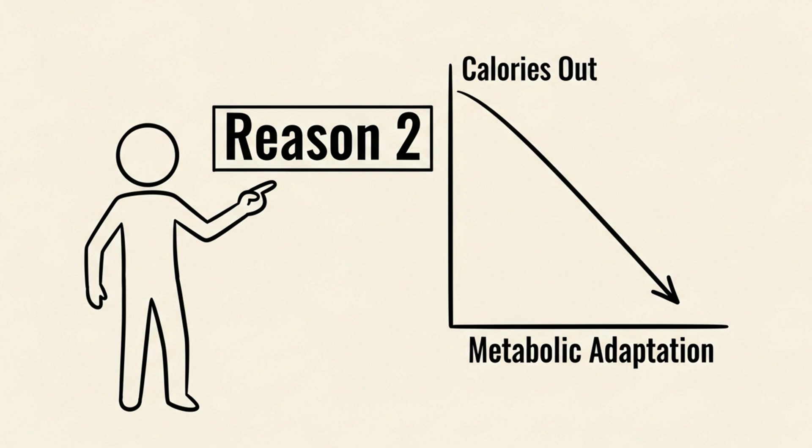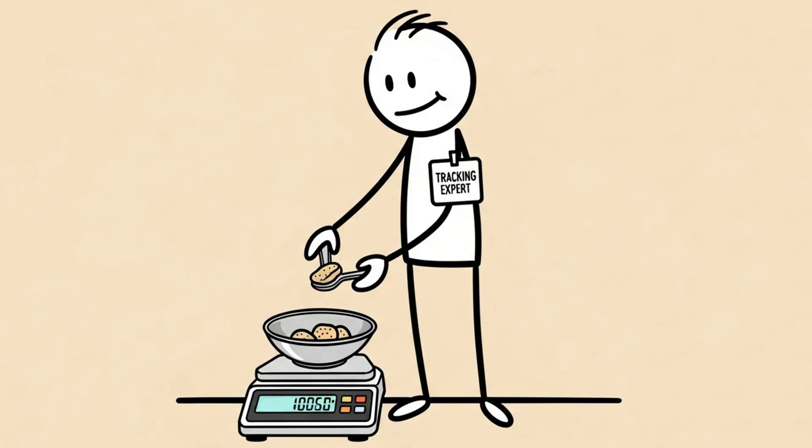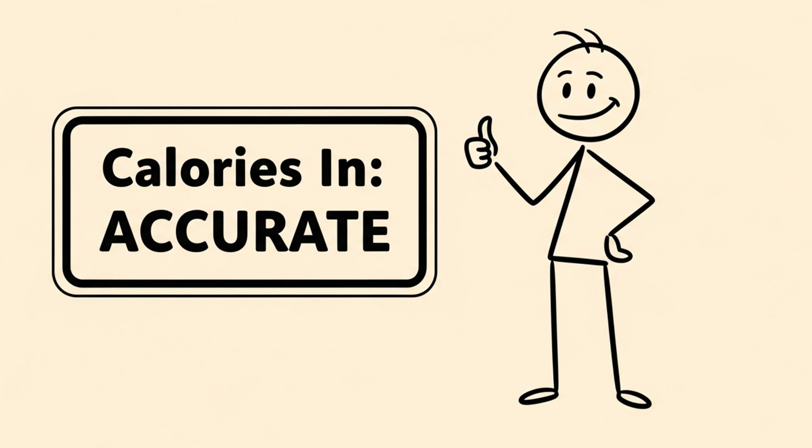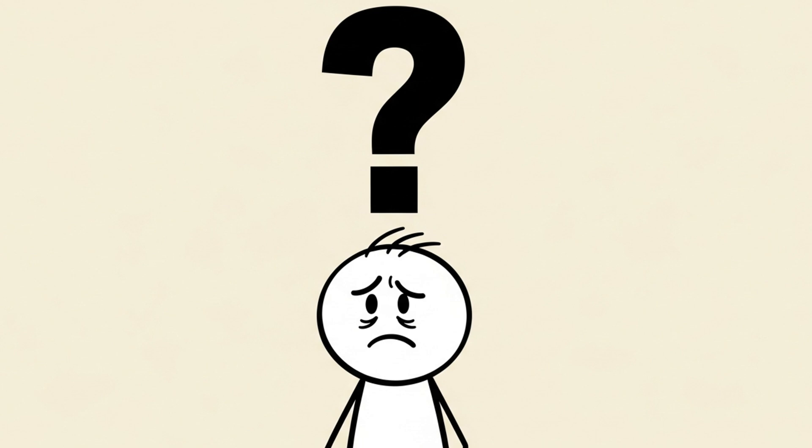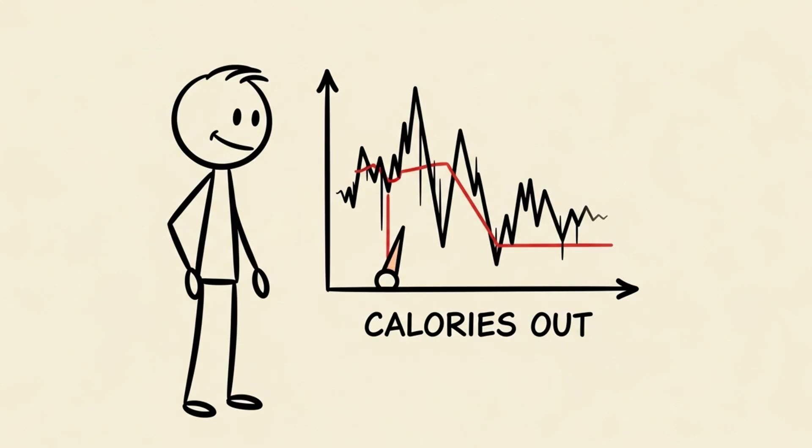Reason 2. Your calories out has decreased. Metabolic adaptation. Okay, but let's say you are a tracking expert. You weigh everything. You know your calories in is accurate. You still might not be losing weight. Why? Because the calories out side of the equation is not static. It changes.